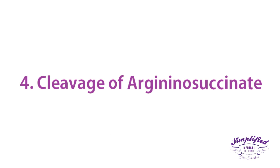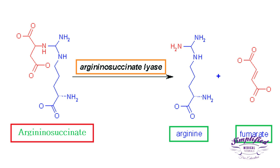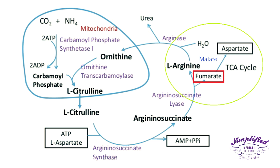The next step is the cleavage of argininosuccinate. The intermediate argininosuccinate is cleaved by the enzyme argininosuccinate lyase to yield arginine and fumarate. Fumarate produced in the urea cycle is hydrated to malate, which can be utilized directly or indirectly in other metabolic pathways.